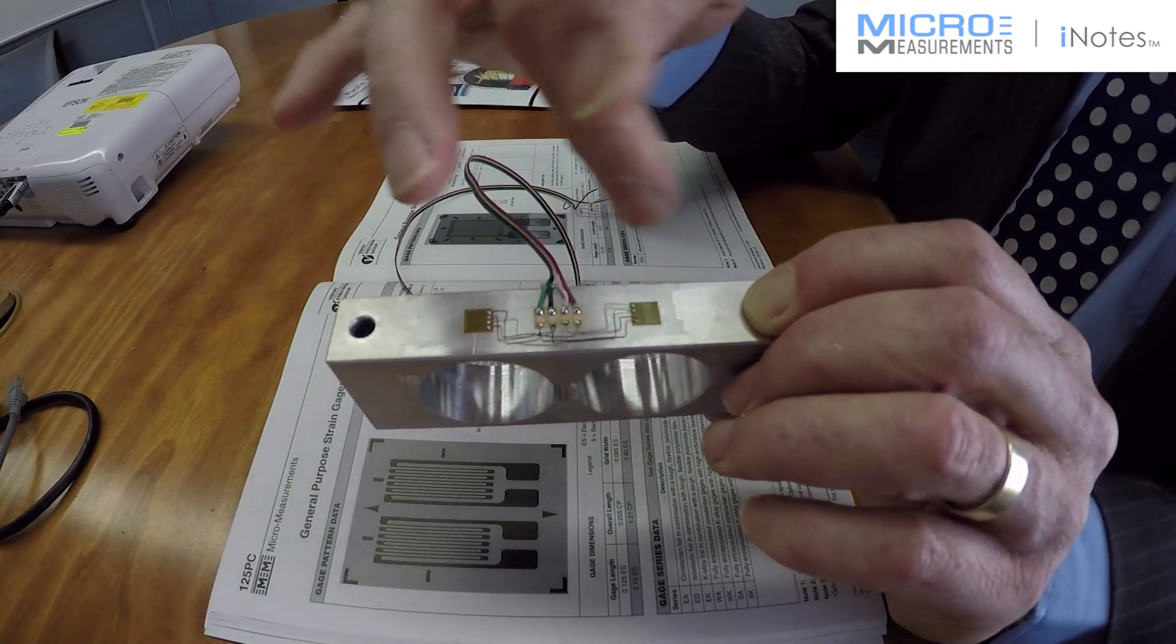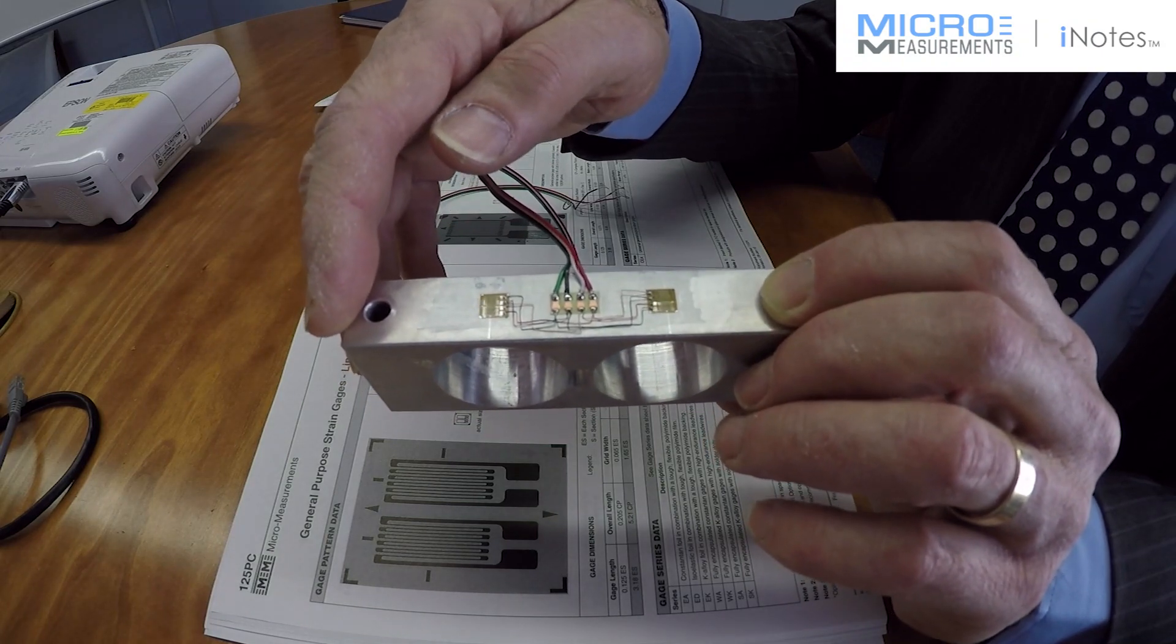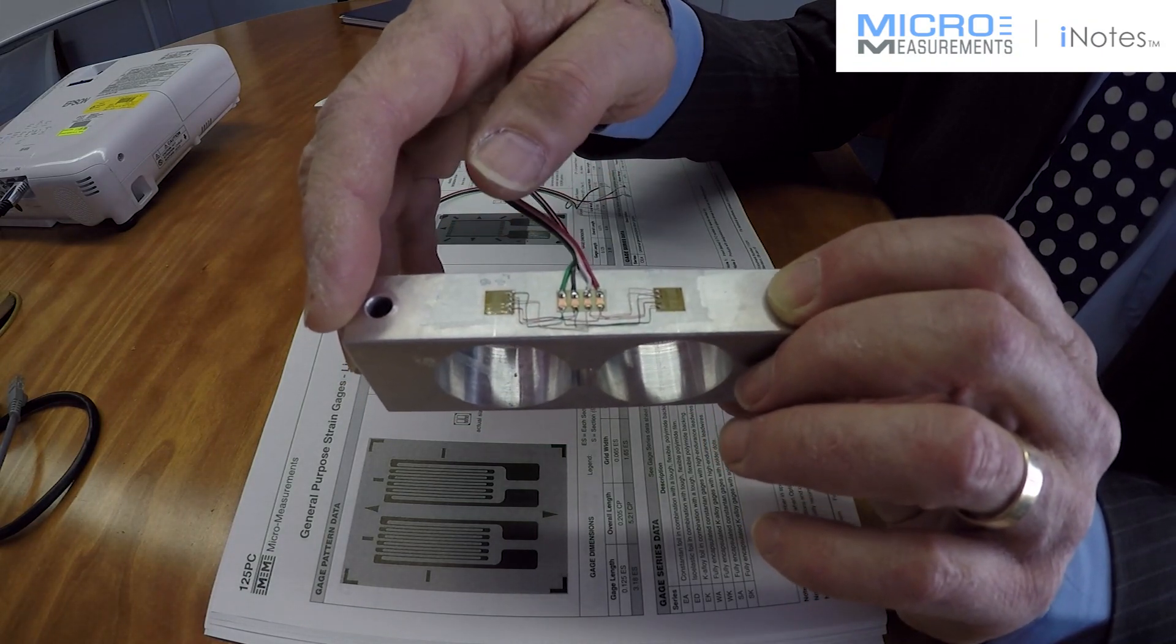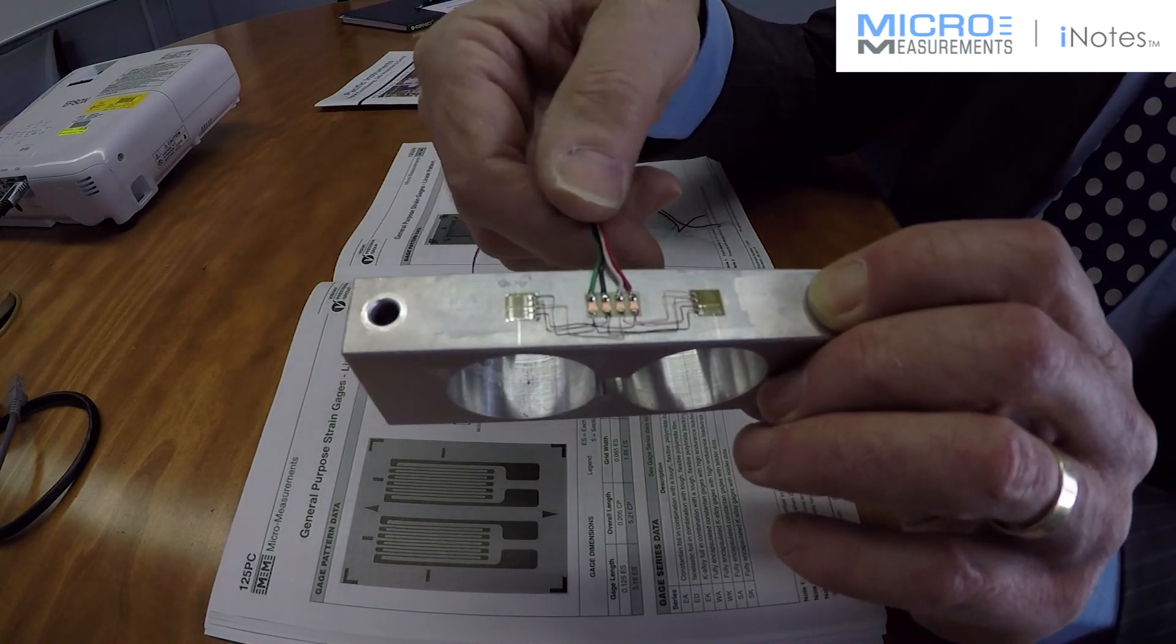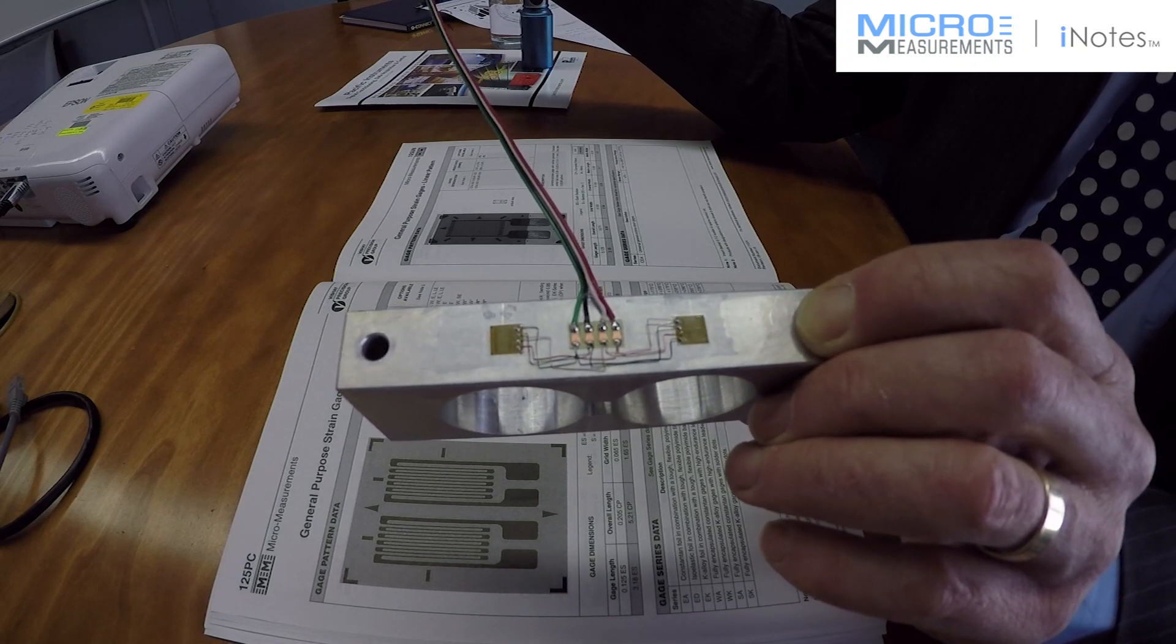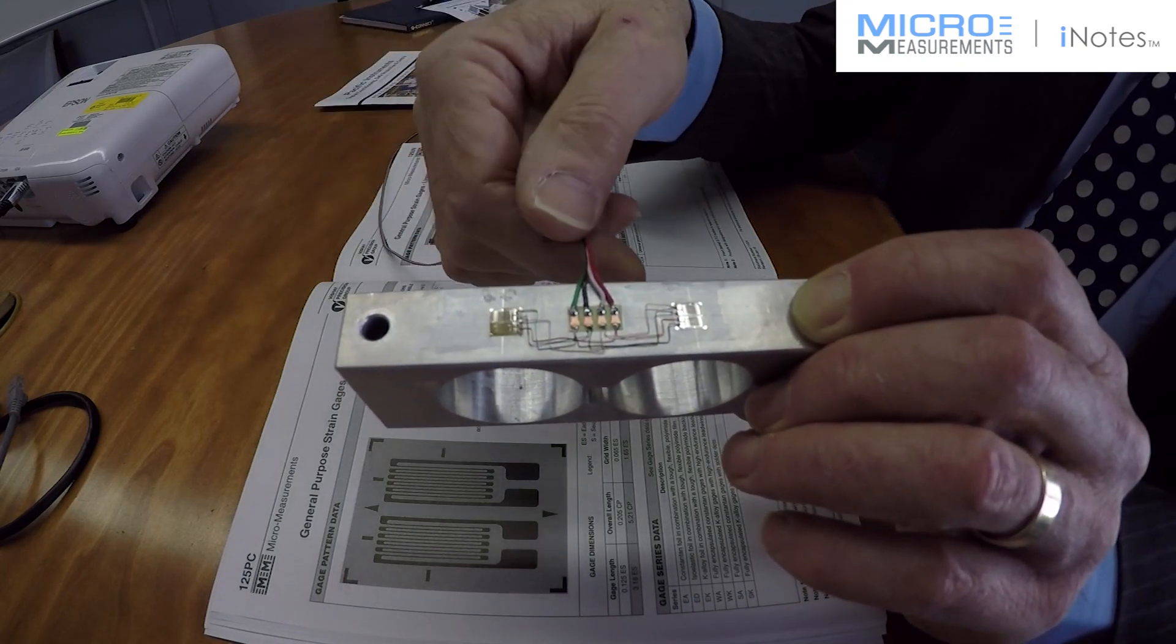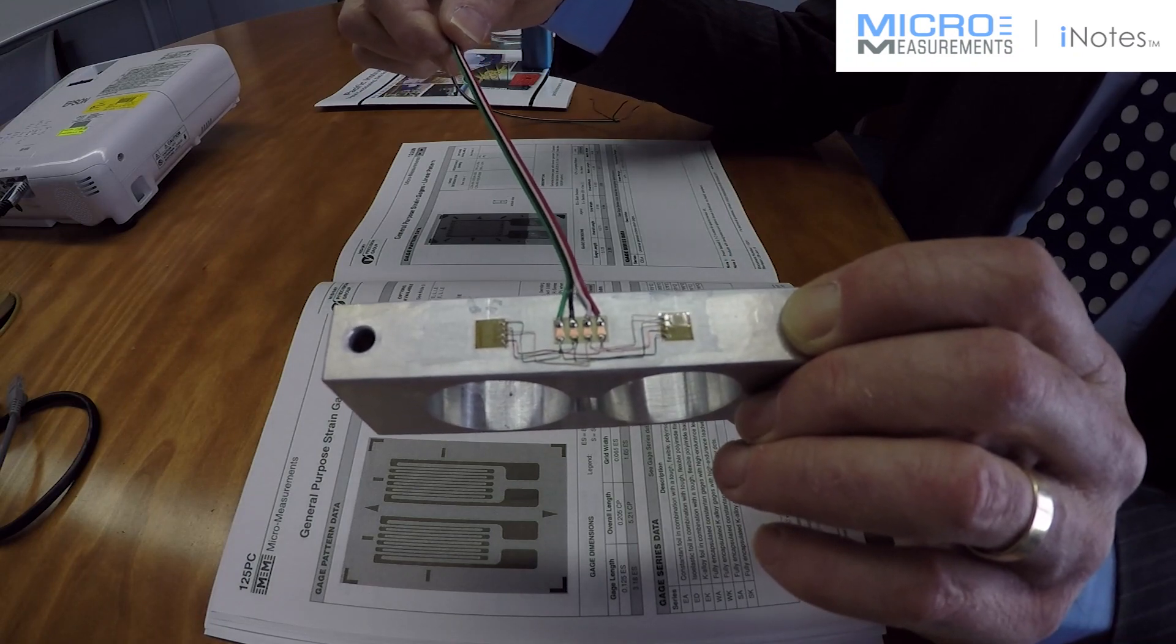In the real world this lot then would be coated in some protective coating to stop the environment or mechanical damage to the strain gauges and the wiring and this would probably be on a real transducer which is going to be used in anger and service in the field. We would use a more robust cable here, perhaps a four core PVC insulated or braided cable.